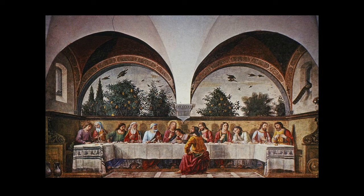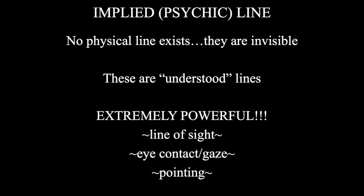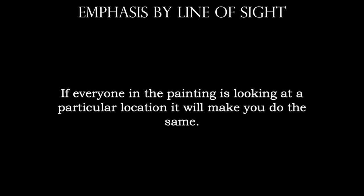Then we're going to move back to a term we talked about earlier in the semester — implied line — where no physical line exists. These lines are invisible; however, they are very powerful. One of the types of implied line is called line of sight, and that is our last type of emphasis. Emphasis by line of sight basically says that where everyone is looking, you're going to be looking there too.